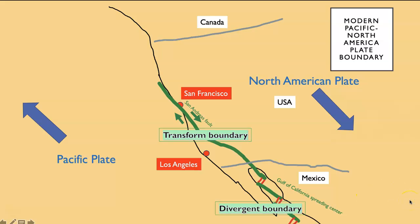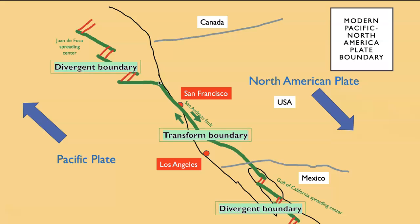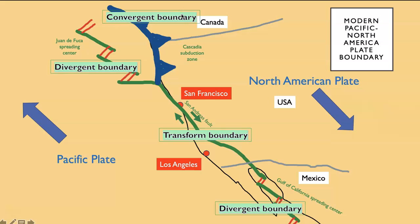Down here we have a divergent plate boundary between the two plates. As we go north, the San Andreas Fault terminates against another transform, which is part of another spreading center system — the Juan de Fuca spreading center system — and thus we have another divergent boundary. But this is not a boundary between the Pacific and North American plates because there's something else in between, marked on the east side by this subduction zone, the Cascadia subduction zone. Up here we have a convergent boundary. There is a little plate in here — the Juan de Fuca Plate — which is subducting beneath Oregon, Washington, and Northern California, creating active volcanoes such as Mount St. Helens and Mount Rainier.